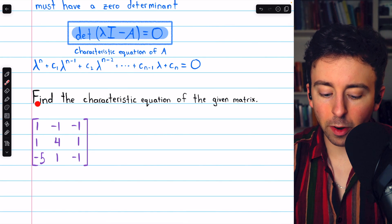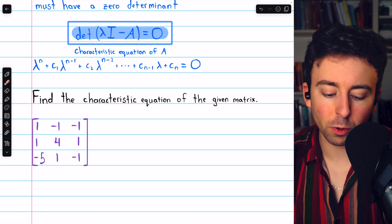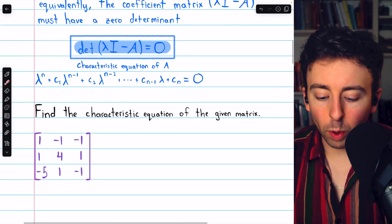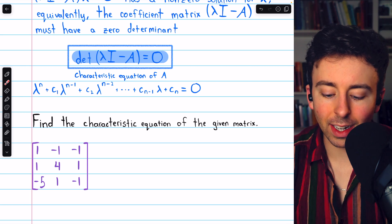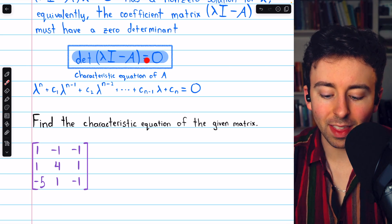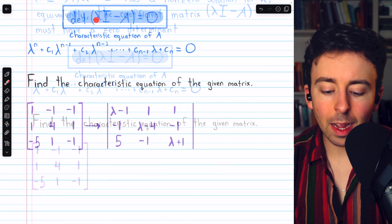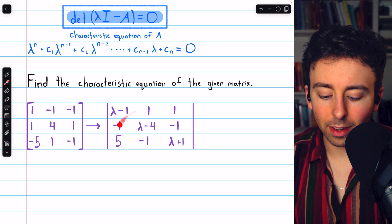But here in our first example, we're asked to find the characteristic equation of this given matrix. And to do that, we're going to have to find the determinant of lambda times the identity minus the given matrix A, and then set that equal to zero.